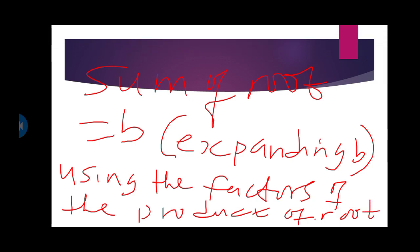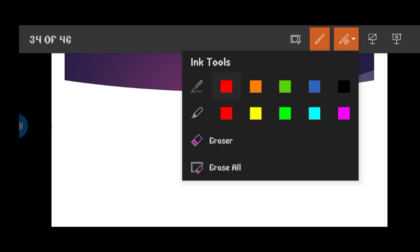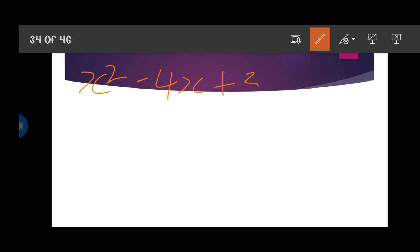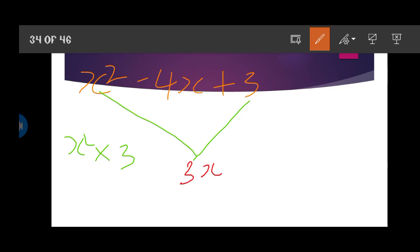Without the product of the roots you will not be able to do your sum of roots. Now let's go back to our work. In this expression x squared minus 4x plus 3, the product of root is the first term times the last term, so that is x squared times 3, which gives us 3x squared. That is going to be our product of root.